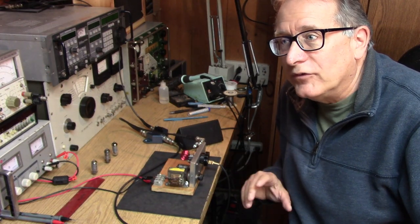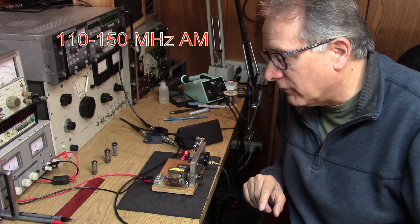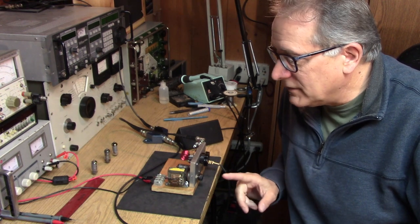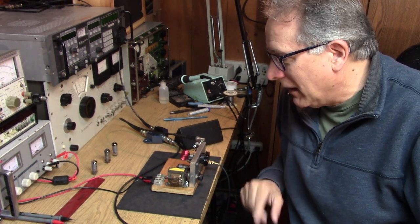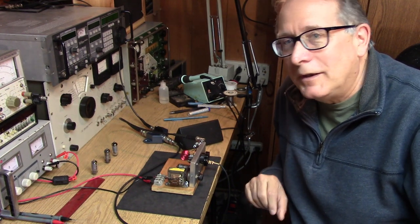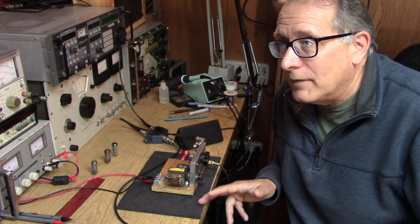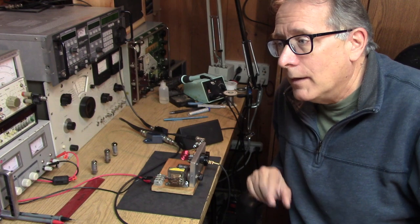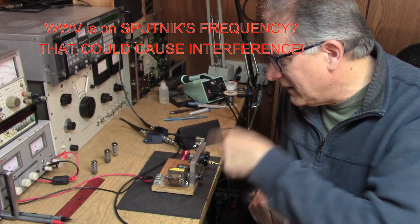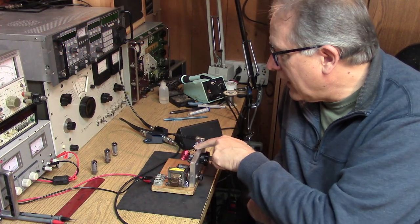Before we look at the high-frequency version of the super regenerative receiver that covers the aircraft band at maybe two meters, I did want to take an intermediate step. I had made this bold statement that I wanted to pick up WWV at 25 megahertz. Well, WWV doesn't actually transmit at 25 megahertz anymore, but they do transmit at 20 megahertz. So in order to do that, I had to take the super regen model that we built and add some turns.